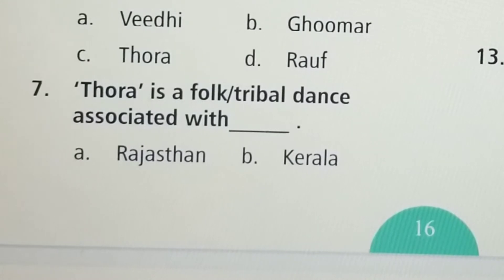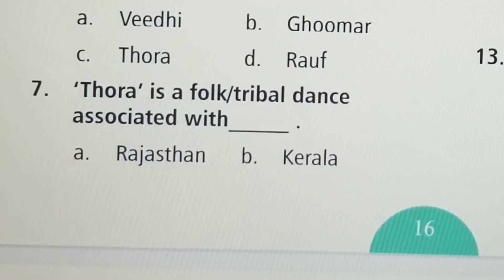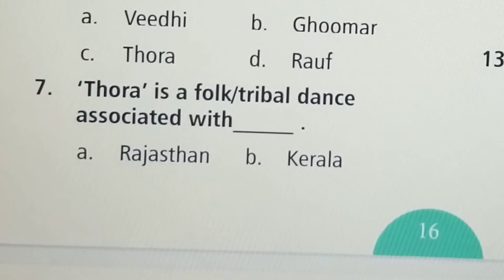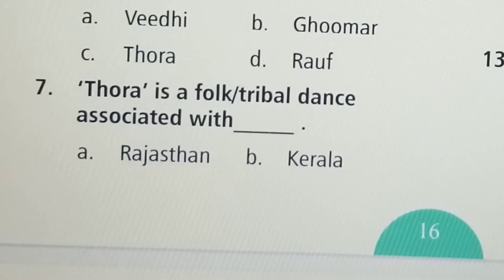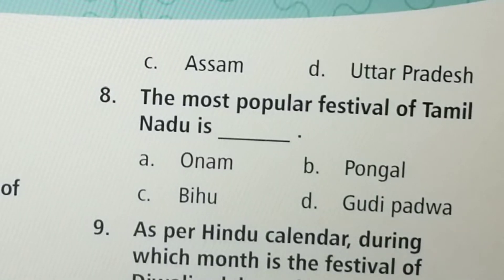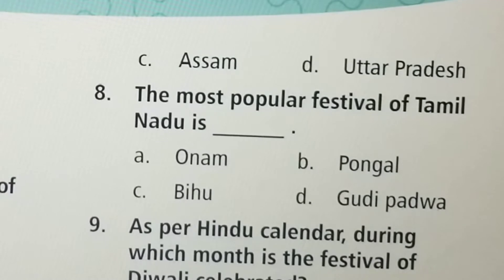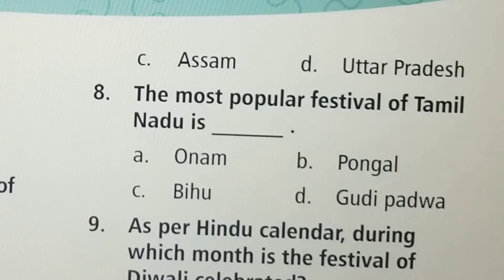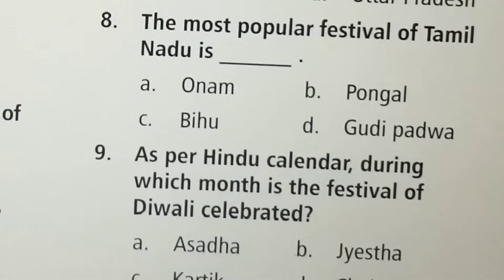Next question: Tora is a folk or tribal dance associated with — Option A: Rajasthan, Option B: Kerala, Option C: Assam, Option D: Uttar Pradesh. Option D, Uttar Pradesh, is the correct answer.